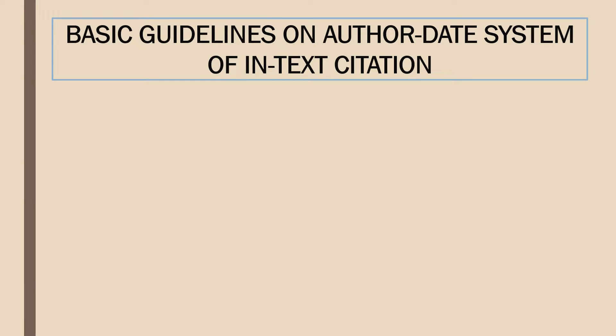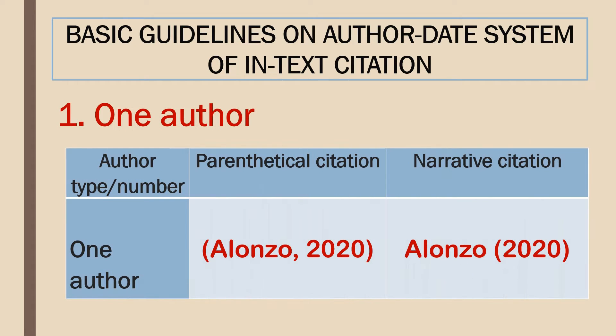Now let us have the basic guidelines on the author-date system of in-text citation in terms of the number or type of author. One author: for parenthetical citation, the surname of the author and the date are placed inside the parentheses and they are separated by a comma. While in narrative citation, the name of the author is part of the text and it is followed by the date inside the parentheses; source details are not separated by a comma.